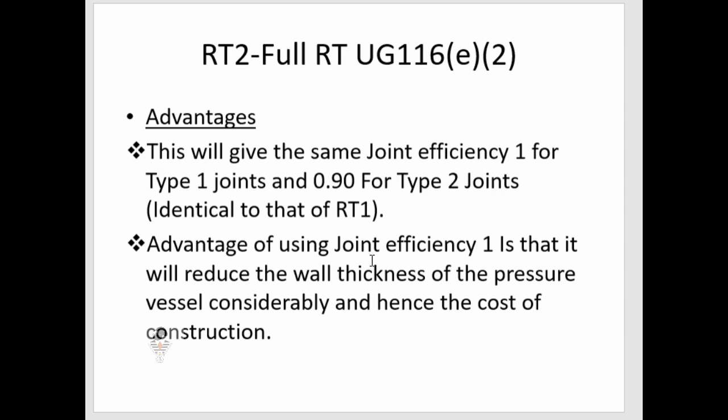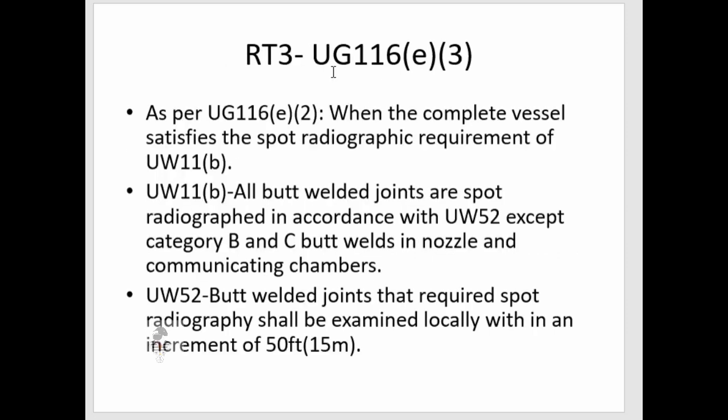The next topic is RT3. A vessel is said to be RT3 when the complete vessel satisfies the spot radiographic examination requirements given in UW11B. UW11B states that all butt welds are spot radiographed in accordance with UW52, except Category B and C butt welds in nozzles and communicating chambers. The remaining Category B and C butt welds in the shell do require spot radiography.